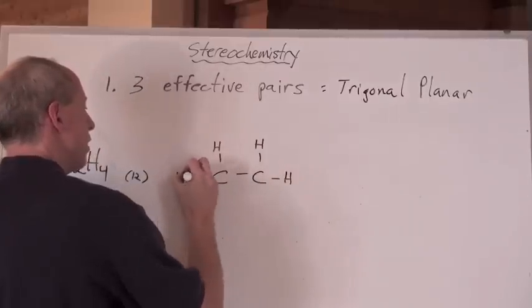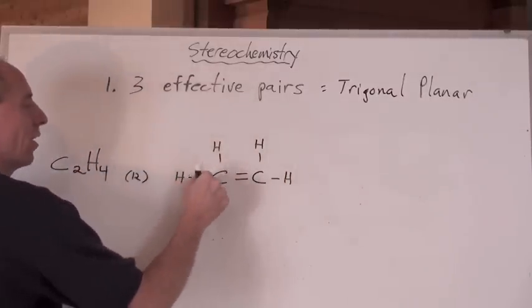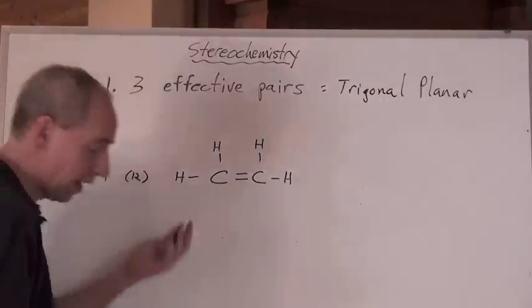So what are you going to do here? You're going to go two, four, six, eight, ten. Ah, twelve. And now the octets are complete for the carbons. Perfect. It's got a double bond.